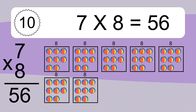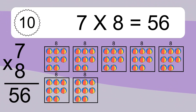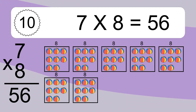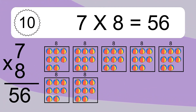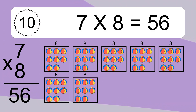We have 7 boxes, and each box has 8 colorful balls inside. If you count all the balls in all the boxes together, you will have 7 times 8 balls. This equals 56 balls.